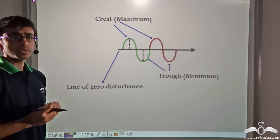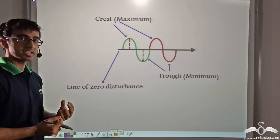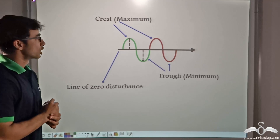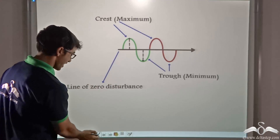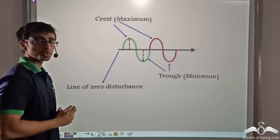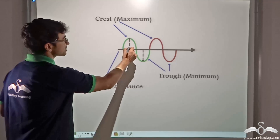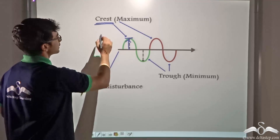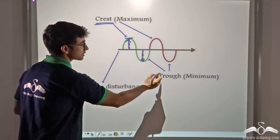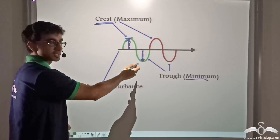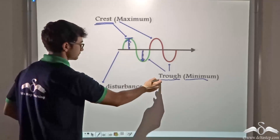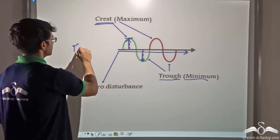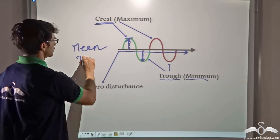In a transverse wave, the particles vibrate up and down about their mean position. The maximum displacement on either side of the mean position is called amplitude. The maximum positive displacement of the particle from its mean position is known as a crest. The maximum negative displacement, or minimum displacement, is known as a trough. The black line denotes the line of zero disturbance — that is, the mean position.